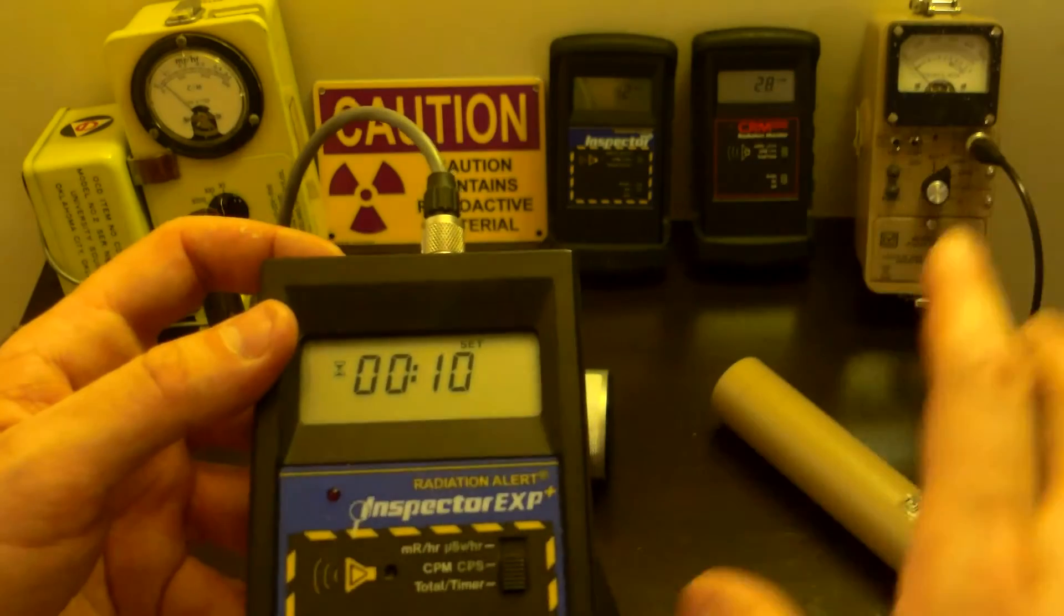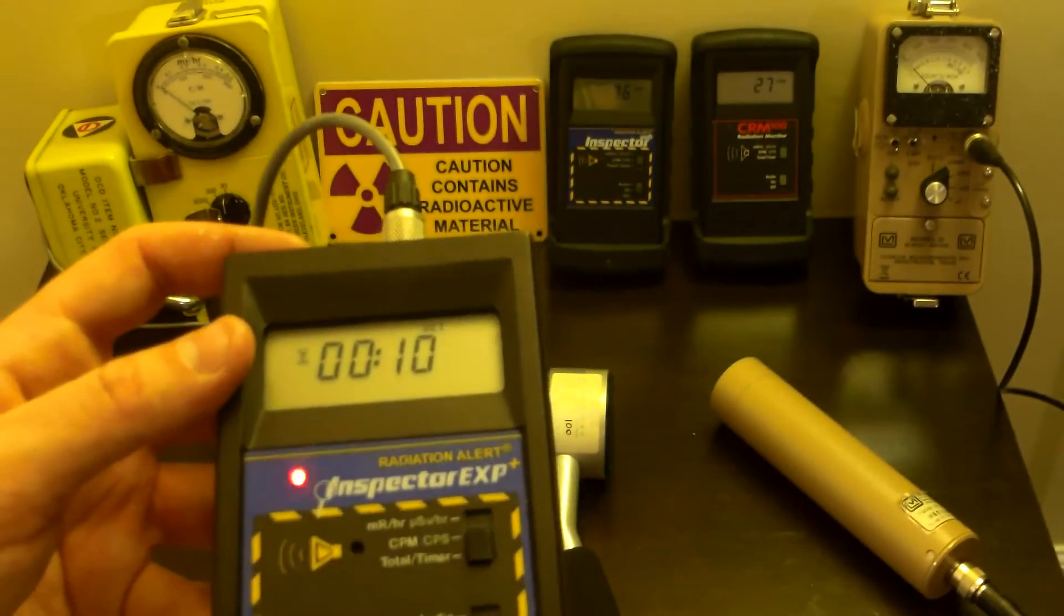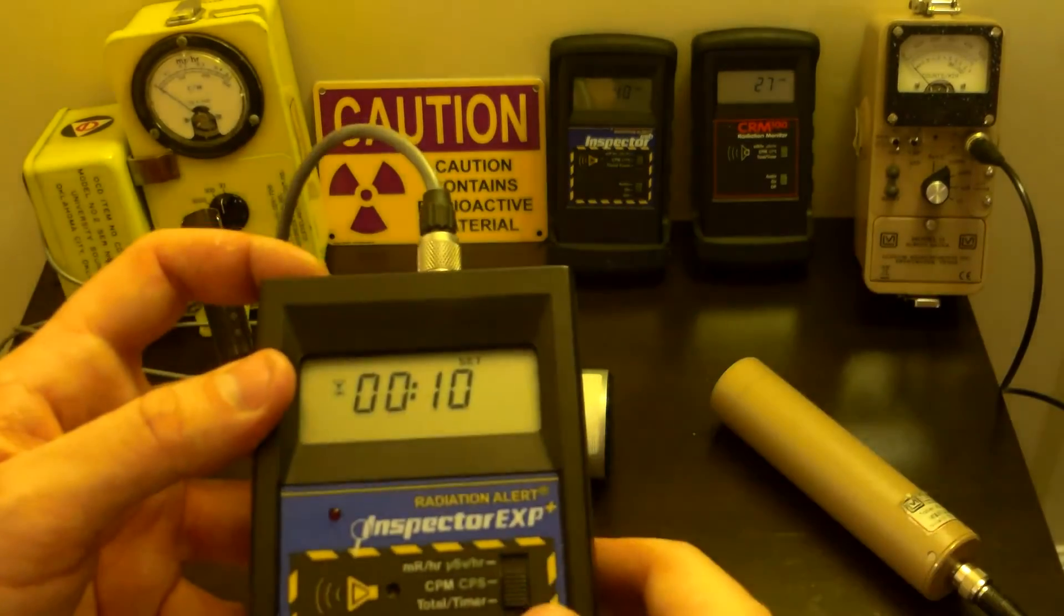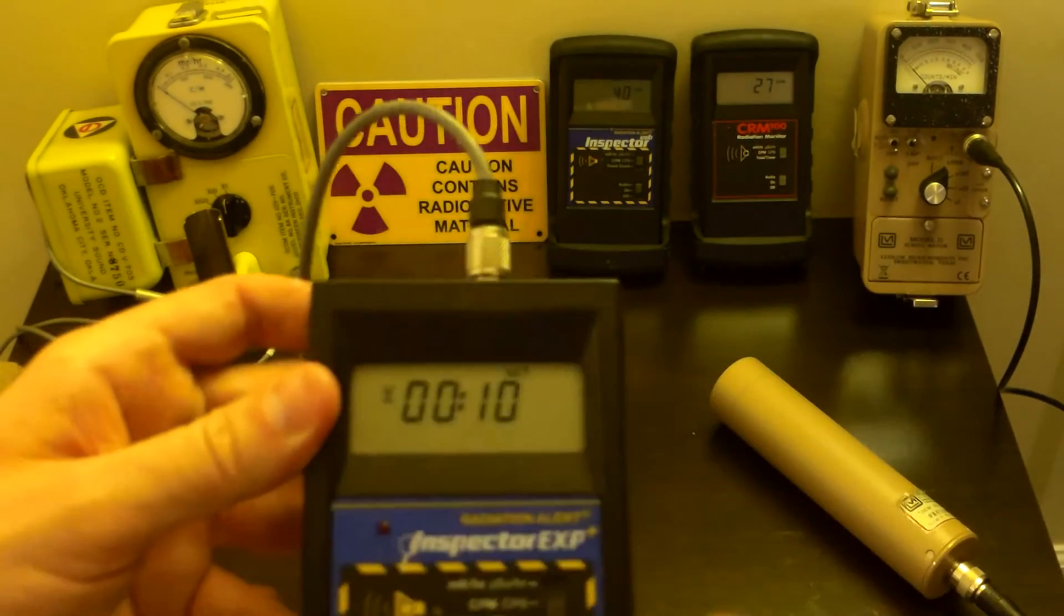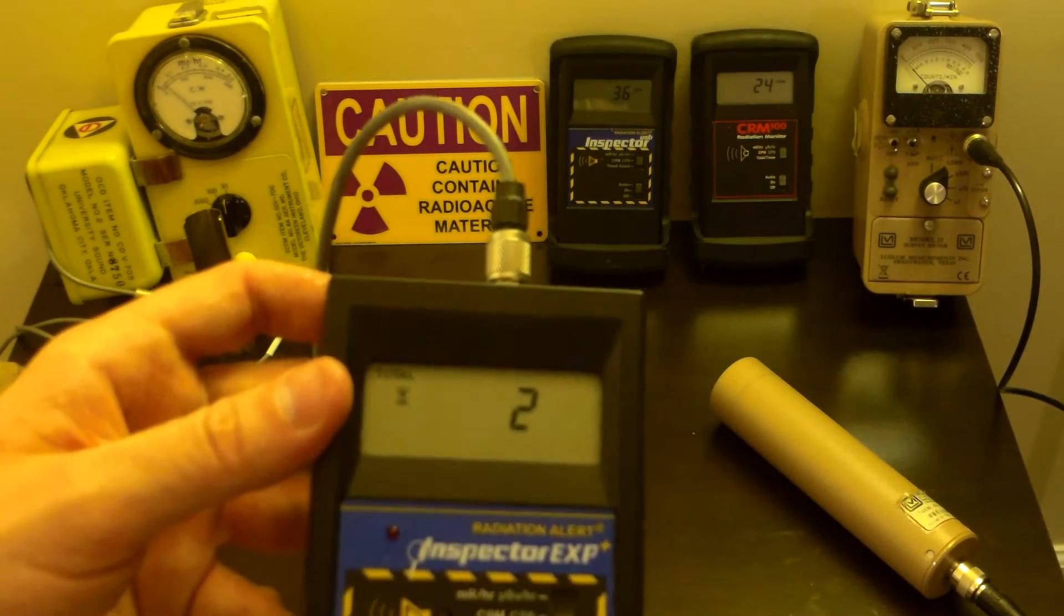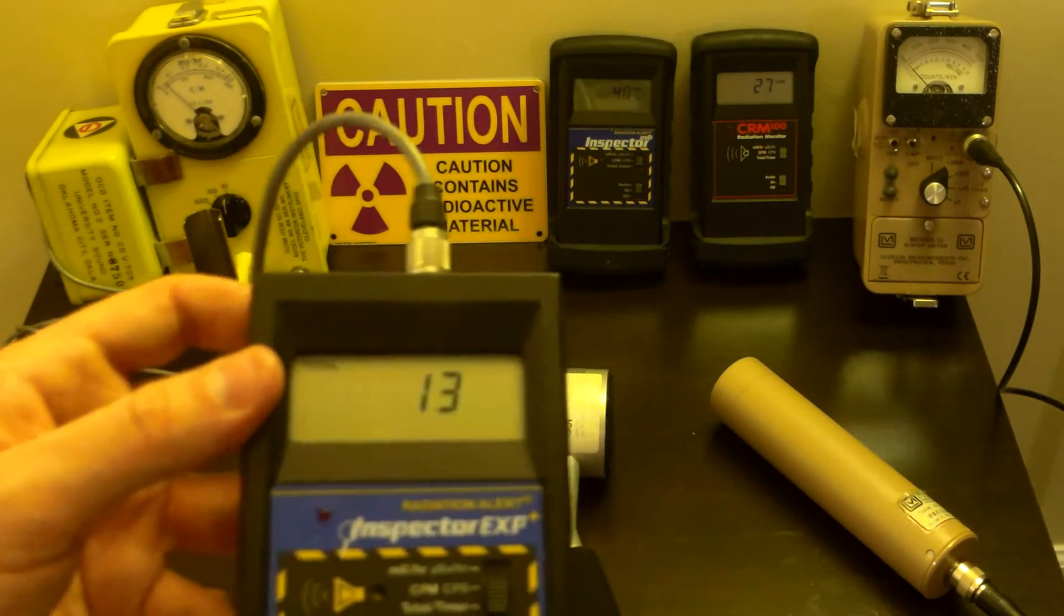And then you're going to calculate, using that statistically, how many you got per minute. It's very simple. Just take the answer you get, divide it by 10, right? You hit the on button, and it'll start counting. Once it gets done counting, you're going to divide the answer by 10. Very, very simple.